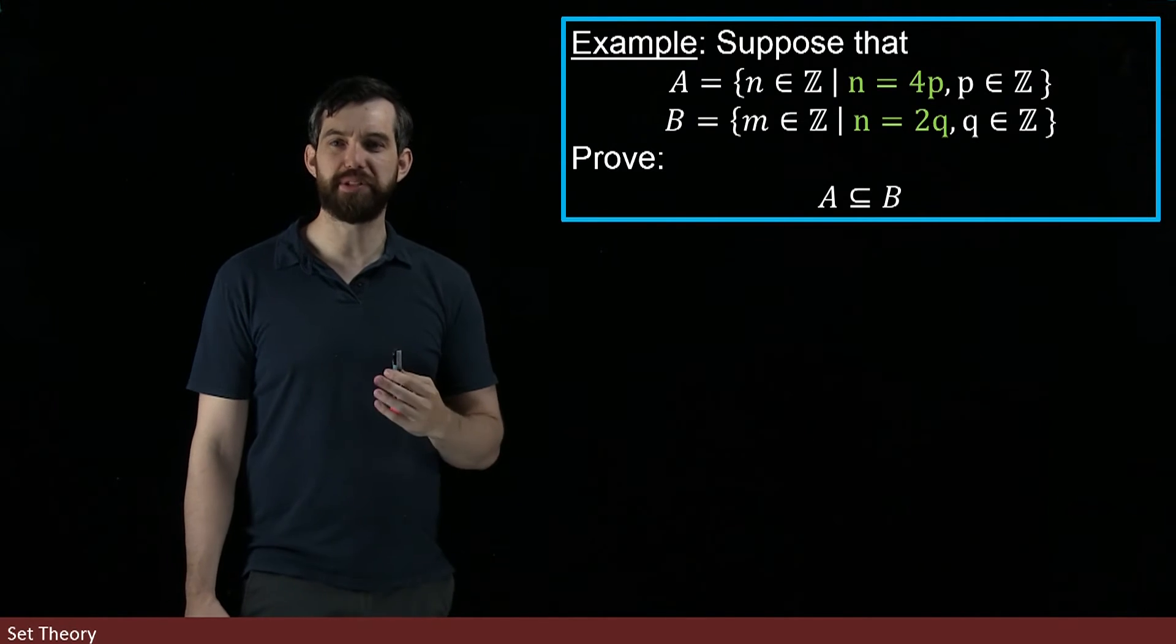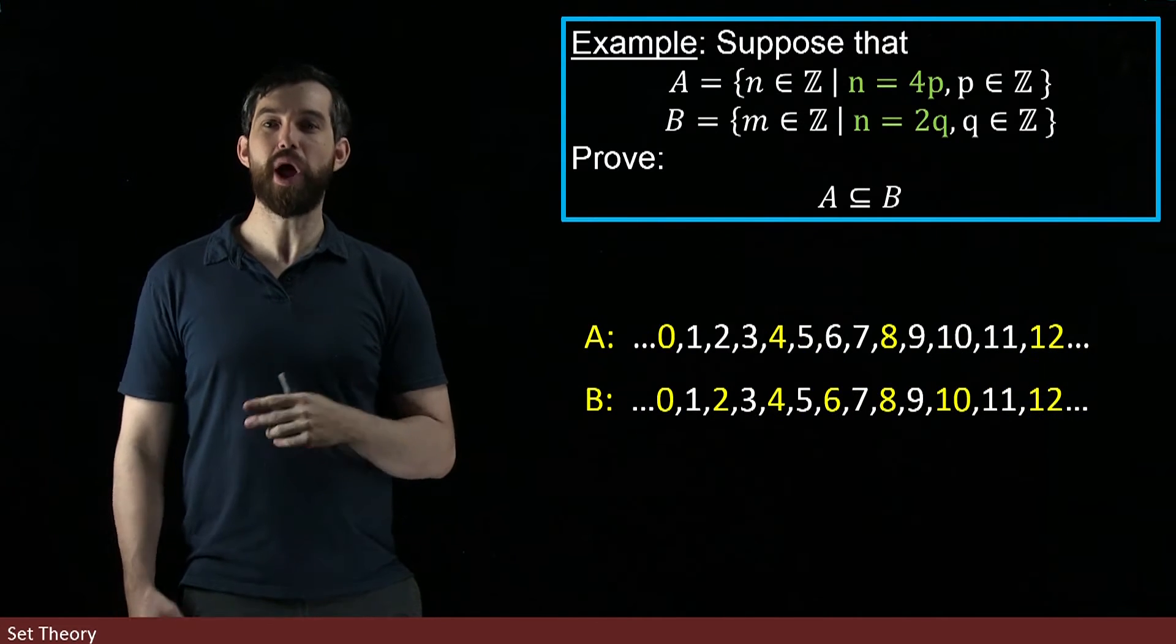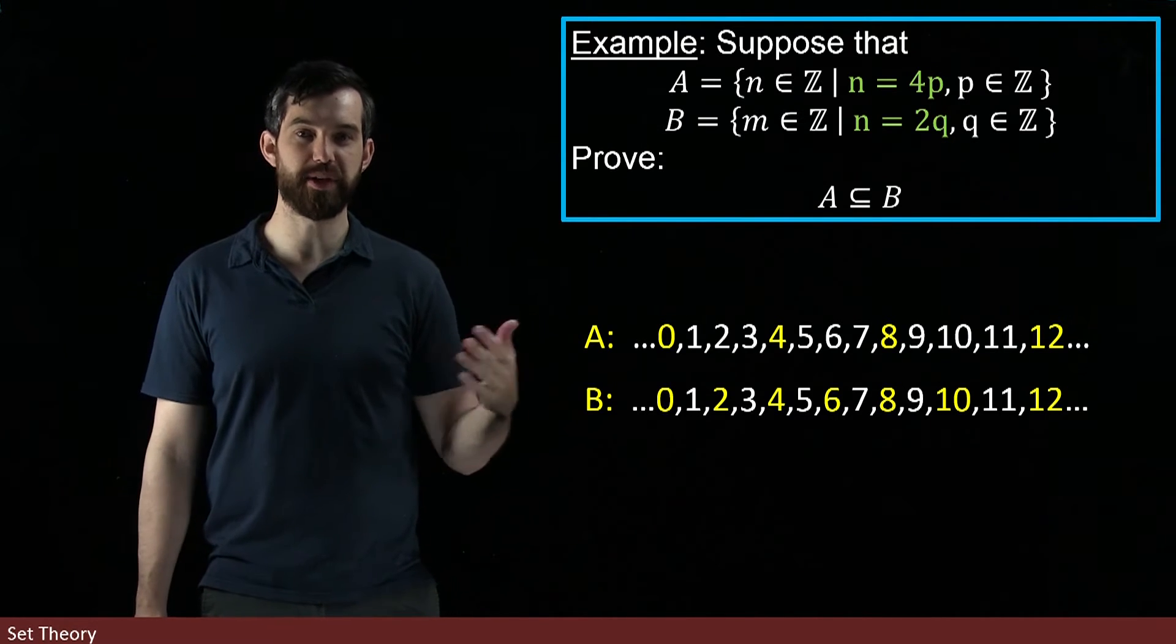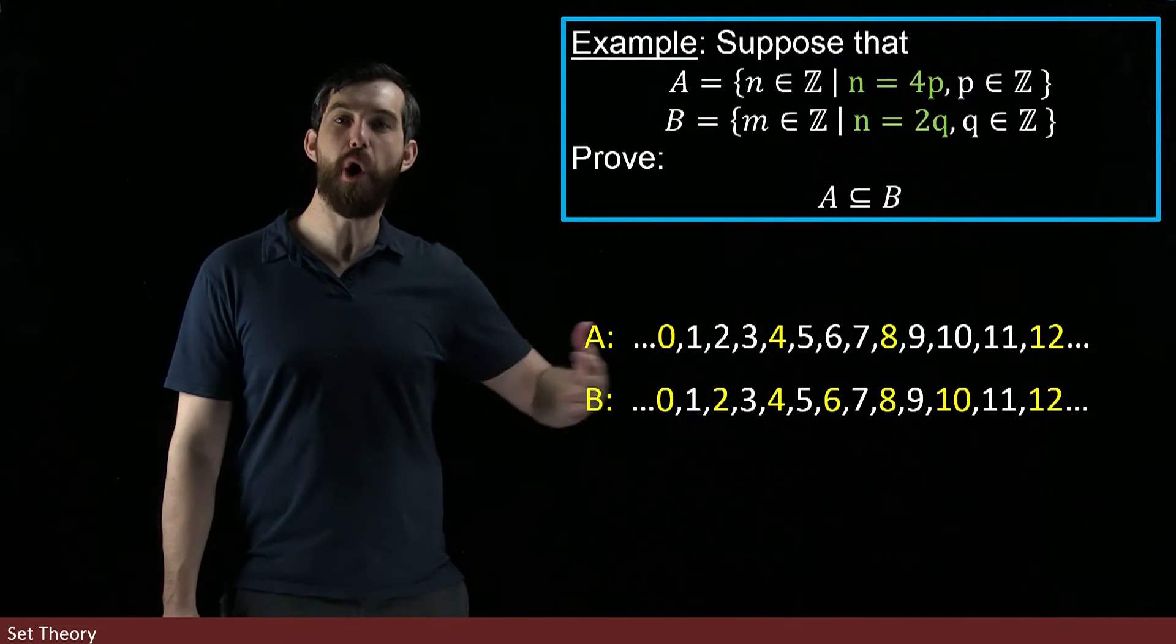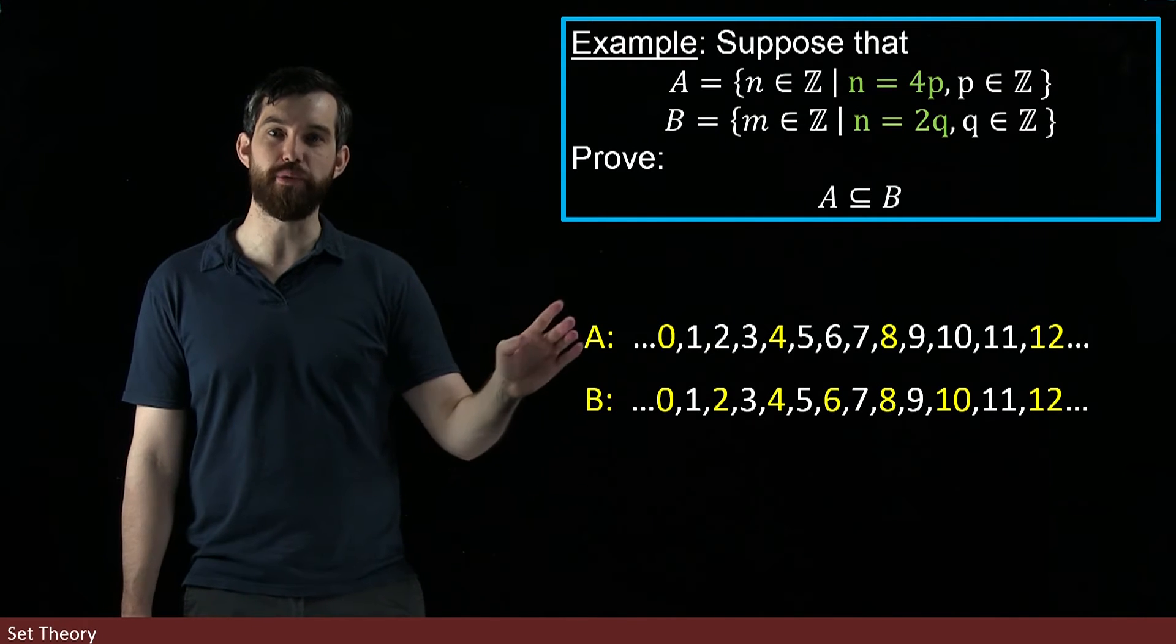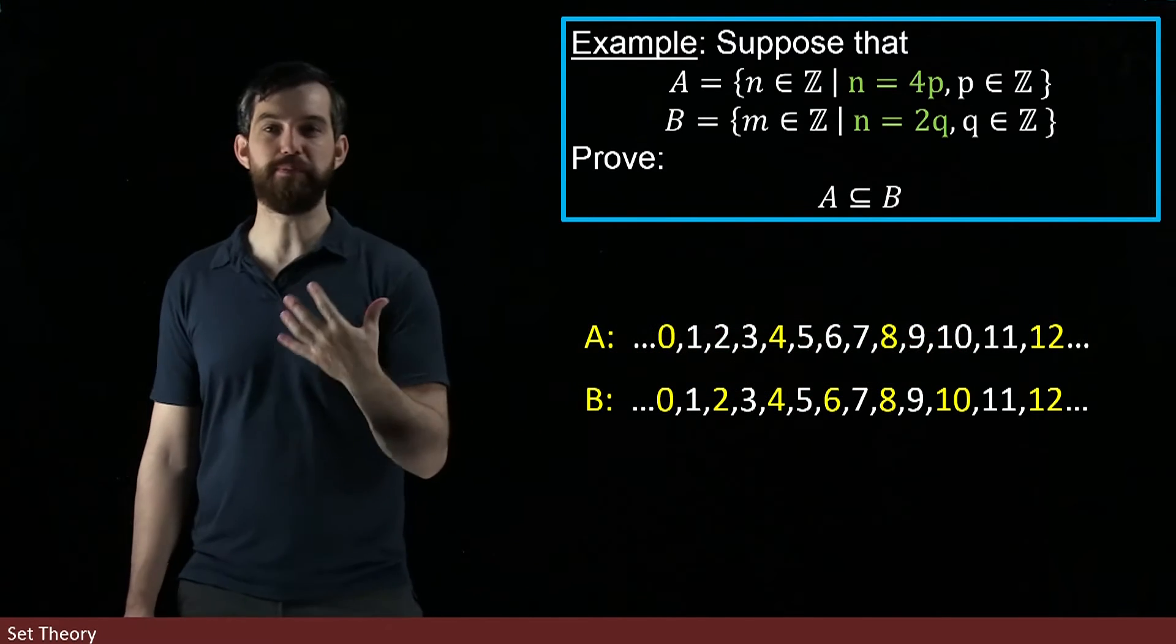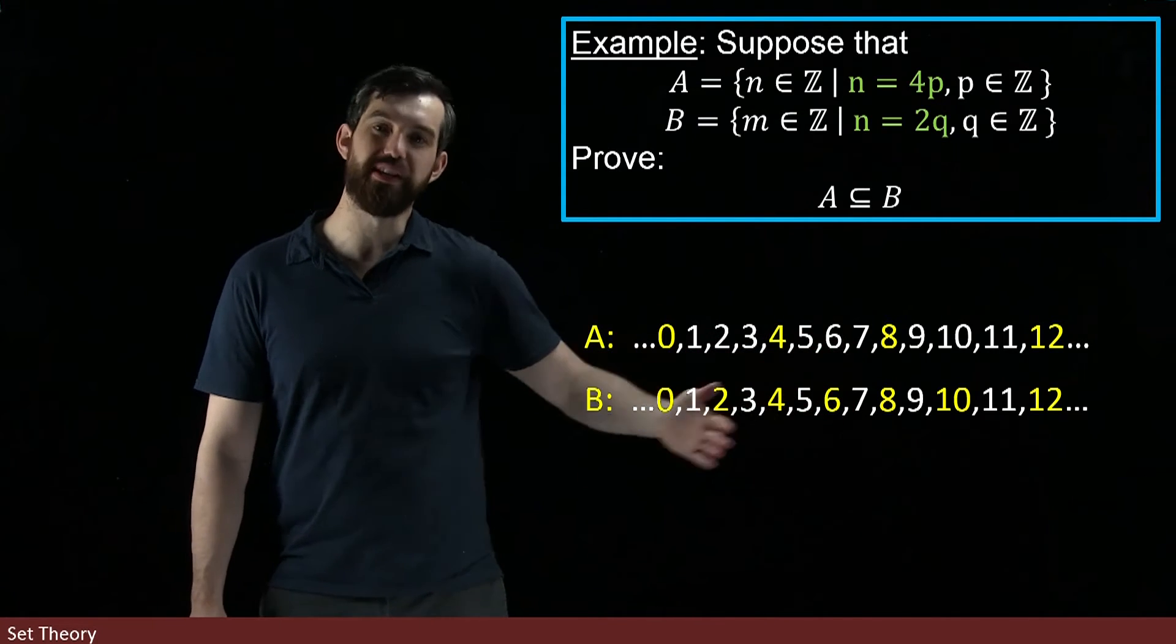Now one way that we can help to visualize this before I get to my formal proof is the following. I'm going to write out A and B here. Notice that only the highlighted yellow terms are actually in the set. A and B are not all of these integers, but I have written out all integers and then highlighted which ones are actually in the set. For A, which is the 4p, it's 0, 4, 8, and 12. And then for B, which is the 2p, it's the 0, 2, 4, 6, all of the different even integers.